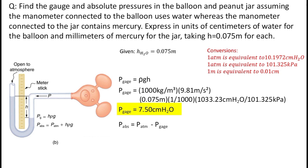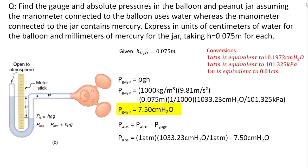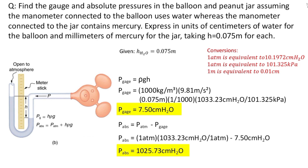To solve the absolute pressure, we use the formula: absolute pressure equals atmospheric pressure minus gauge pressure. The gauge pressure is subtracted because the water at the bottom of the manometer is equal on both sides, leaving the water column on the left side; since the pressure acts upward, the sign becomes negative. So we have 1 atm, converted to 1,033.23 cm of water, minus 7.50 cm of water, giving an absolute pressure of 1,025.73 centimeters of water.